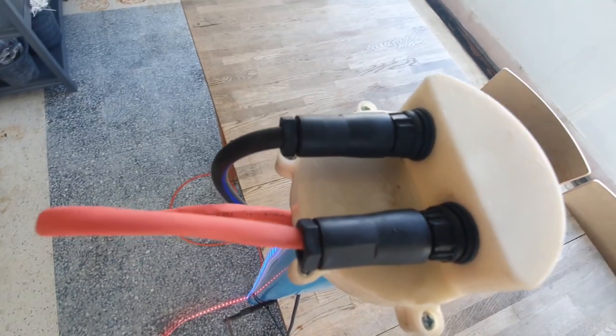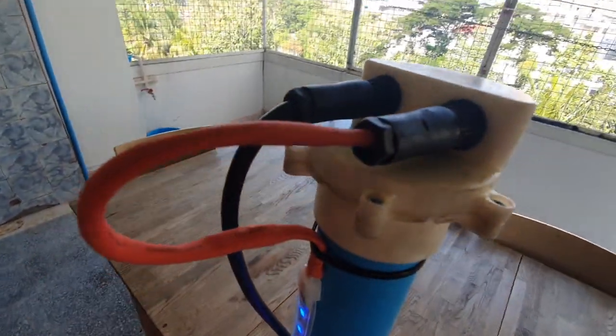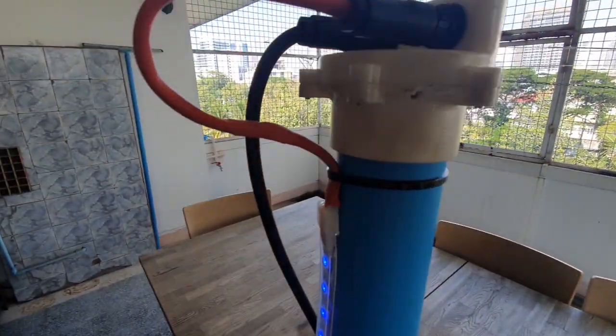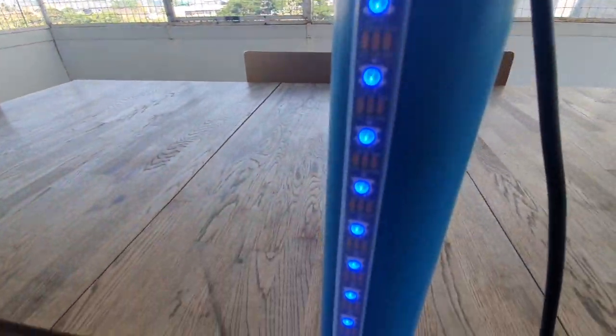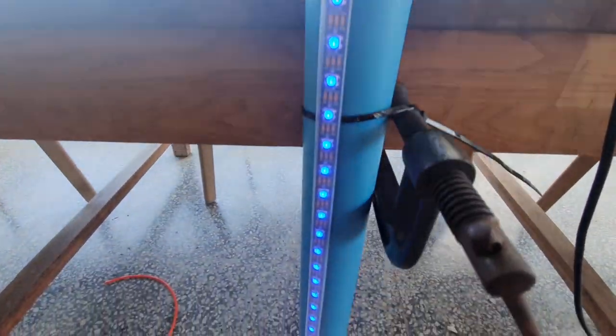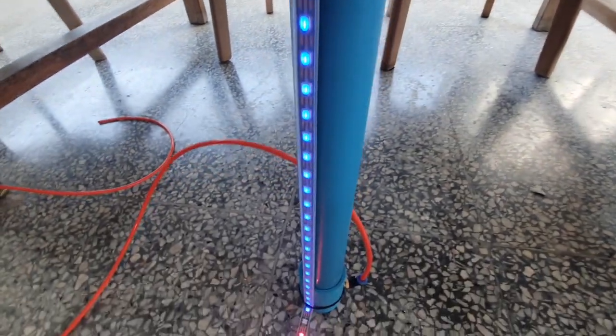To display the water level, we opted to use a simple addressable LED strip that's exactly the same length as the water tank itself. This makes it incredibly obvious and intuitive when you're looking at the reading.